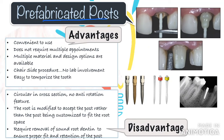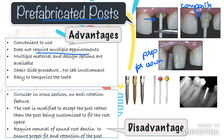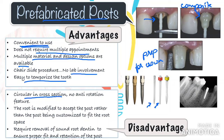Coming to pre-fabricated posts: these posts are cemented or screwed into the root space. The small core that protrudes from the root is packed with dental composite material. After the material has been cured and adjusted, an impression is taken for the fabrication of the prosthetic crown. This is a direct chair-side procedure and is more popularly used. Advantages: pre-fabricated posts do not require multiple appointments — it can be done the same day. Multiple material and design options are available, there is no lab involvement, and it is easy to temporize the tooth.